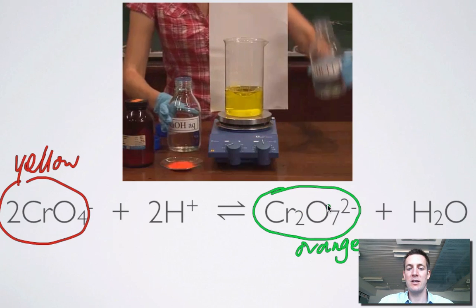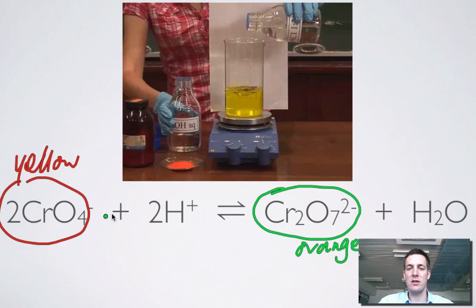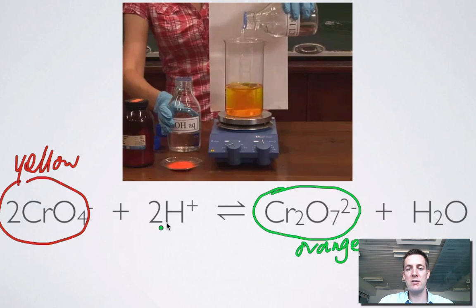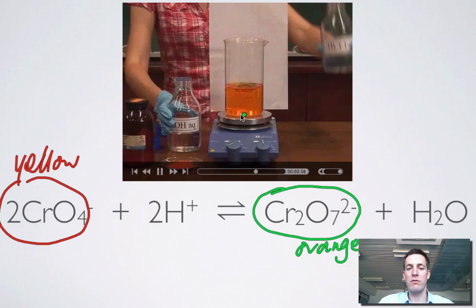Adding OH minus. And it's going back to the left-hand side. Adding H plus. It's going to the right again. So this is very similar to what we've just seen before.